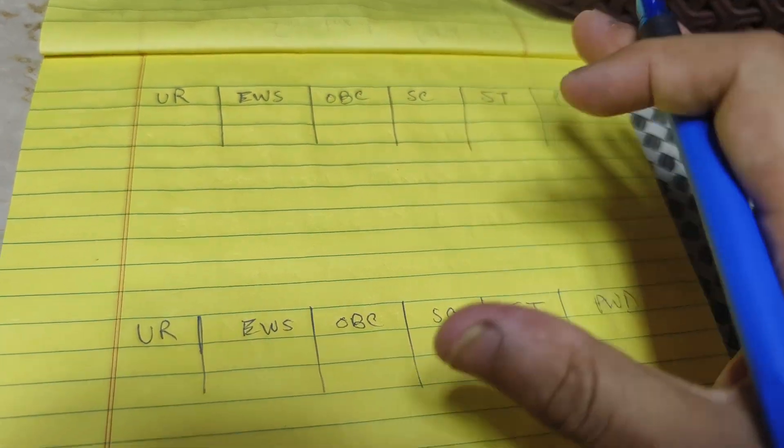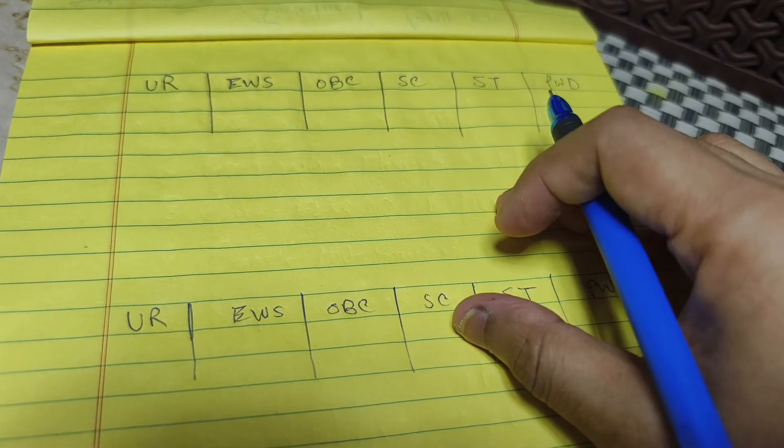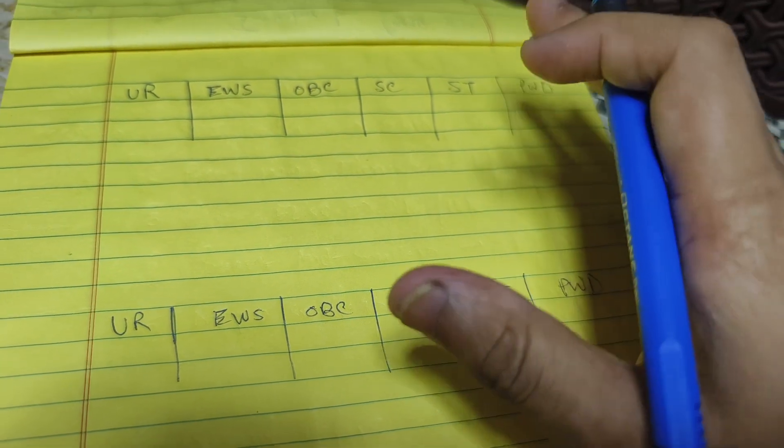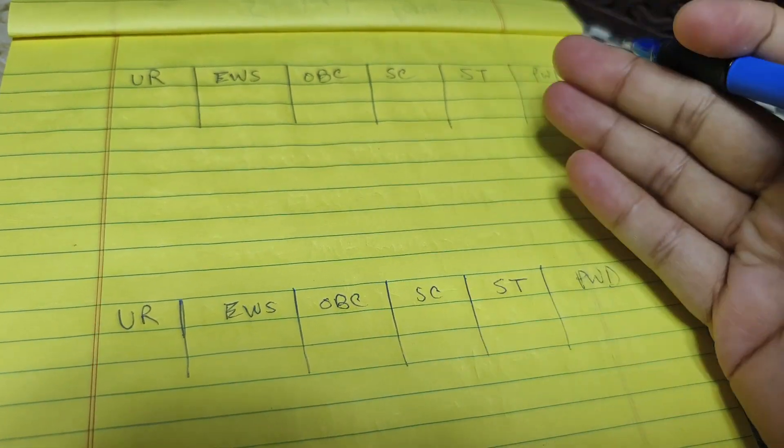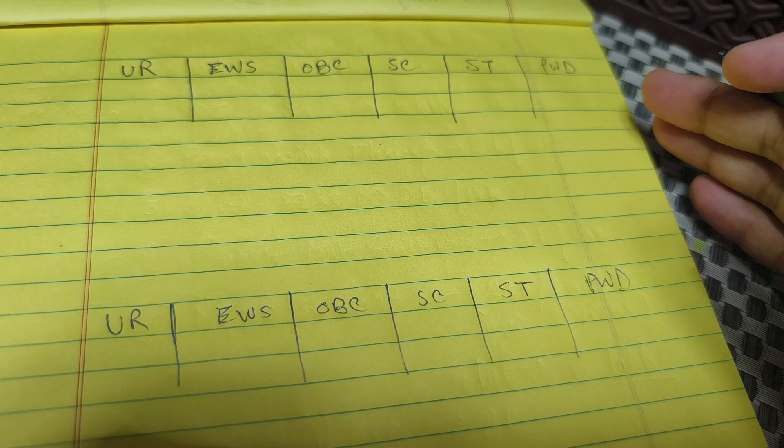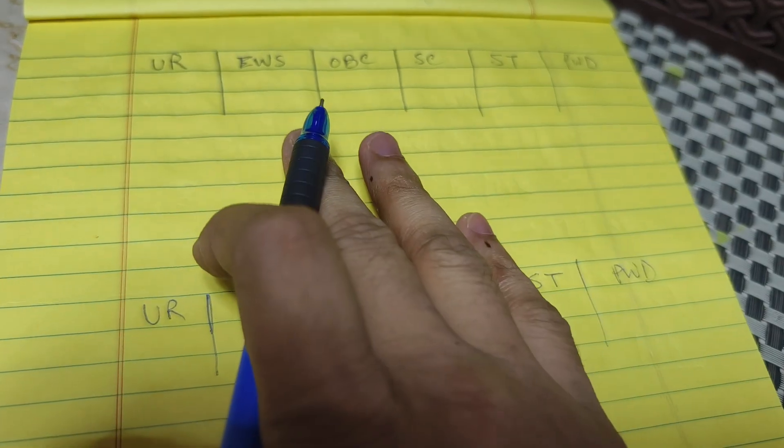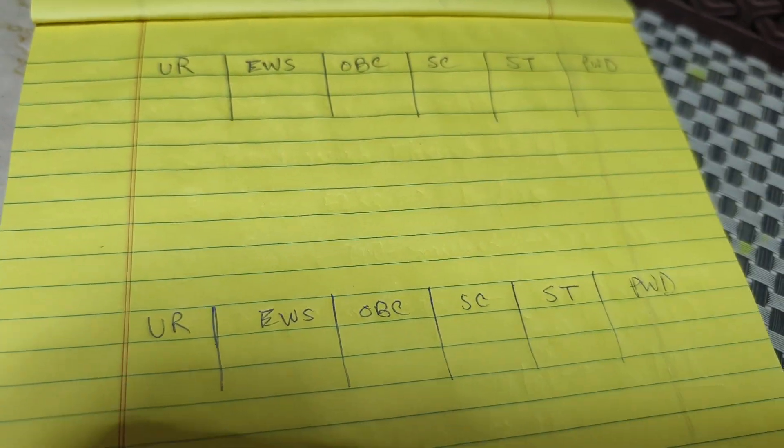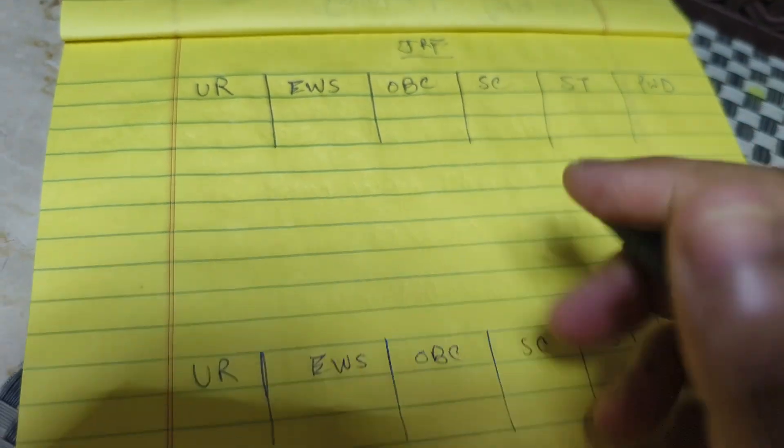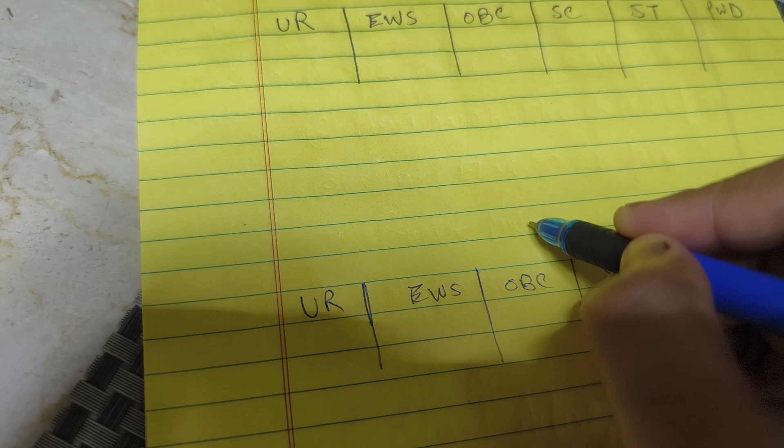Alright everyone, this is a video regarding the expected marks cutoff. After seeing the question paper, first of all I'll mention the cutoff in marks and then I'll mention the cutoff for the JRF category and the LS category.